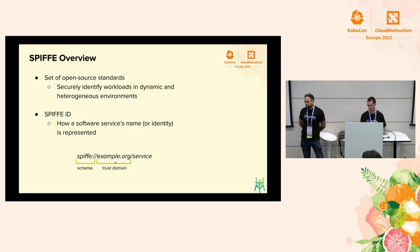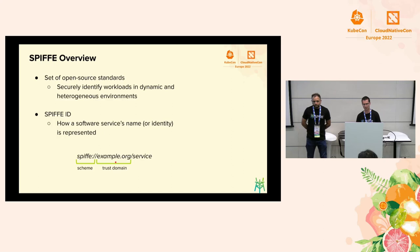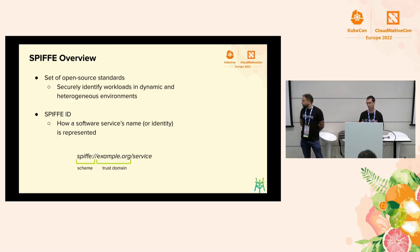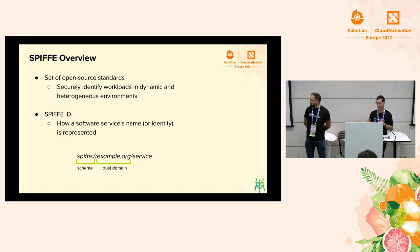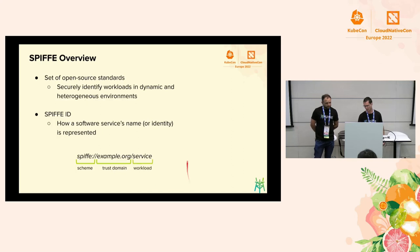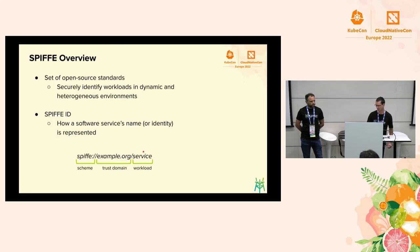The authority component of a SPIFFE ID is what we call a trust domain. A trust domain in SPIFFE defines security boundaries. If one trust domain is compromised, that shouldn't affect a different trust domain. For example, you may run a trust domain for development and a different trust domain for production, which sets the boundaries there. The path part of the SPIFFE ID URI identifies a specific workload within a trust domain.